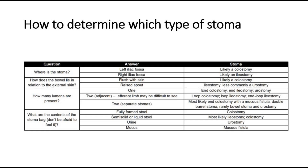Two separate stomas suggest a double barrel stoma or end colostomy with a mucous fistula. The contents of the stoma bag also help — formed stool is seen in colostomy, semi-solid or liquid stool in ileostomy or colostomy, and urine in a urostomy.